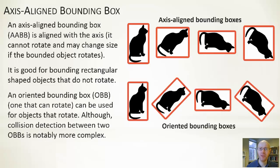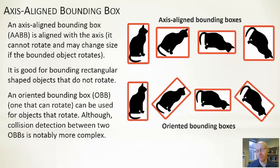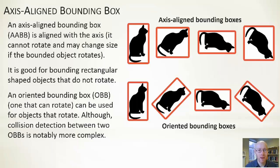For an oriented bounding box (OBB), the box can rotate with the object, so it's good for rectangular shapes that rotate. One important aside: while circle-to-circle and AABB-to-AABB collision detection are easy, OBB-to-OBB collision detection is actually quite a sizable step up in complexity. Because the box can rotate, you have to use trigonometry to transform the box based on its rotation — this is particularly true in three dimensions but applies in 2D as well. That's beyond the scope of this lecture, though we'll have a brief overview in an upcoming session.